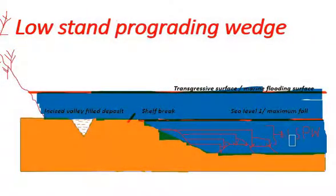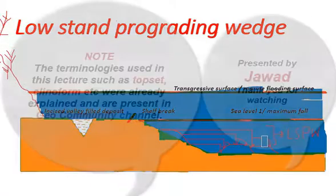Low stand prograding wedge is mostly in the form of topset and clinoform.